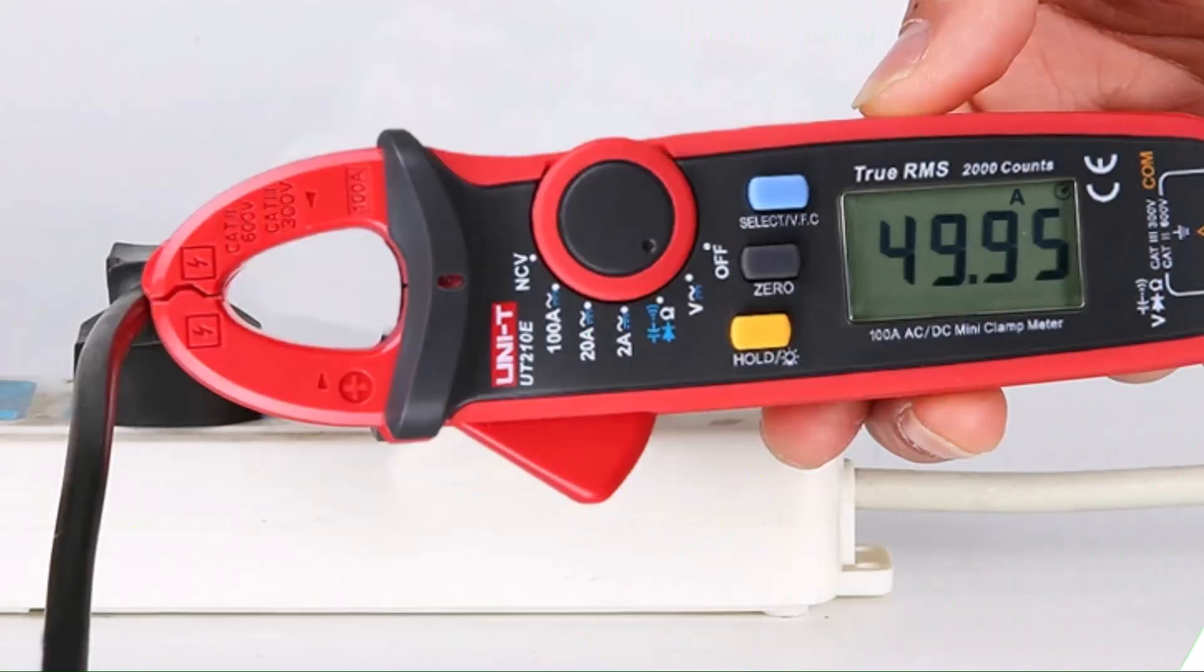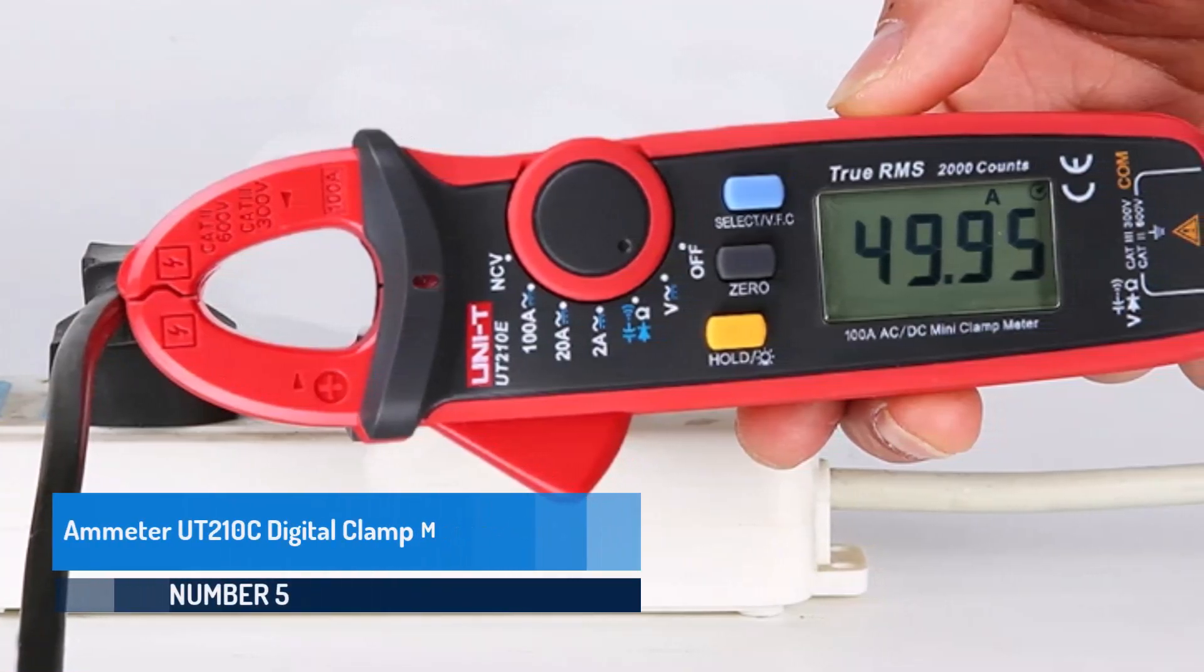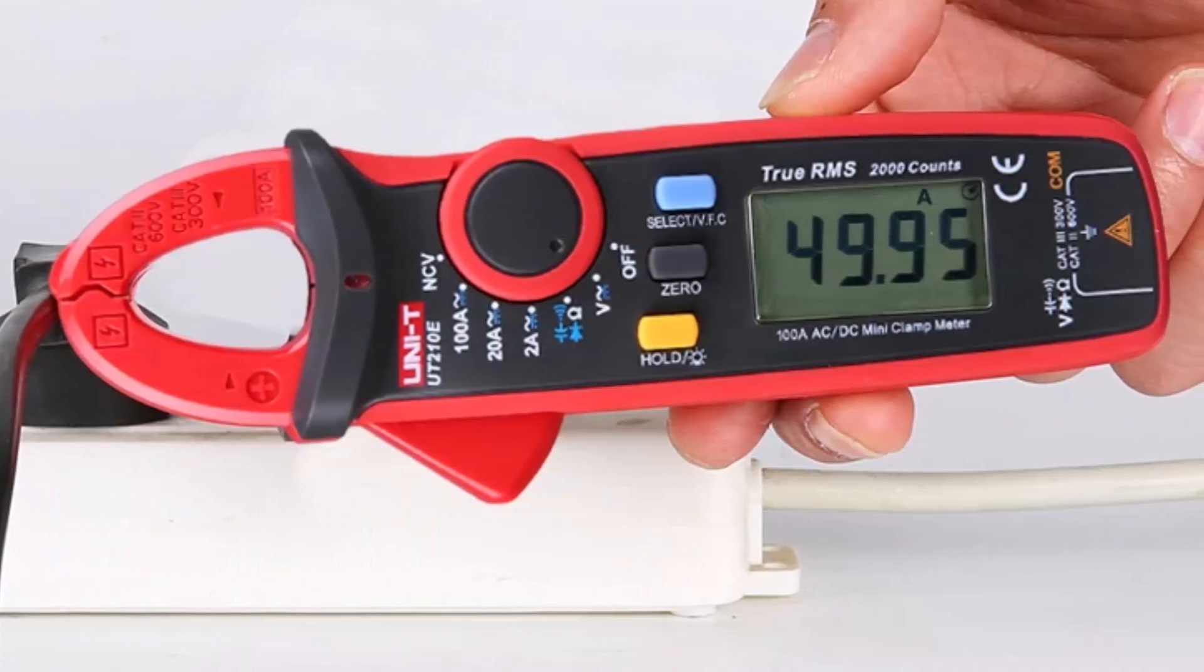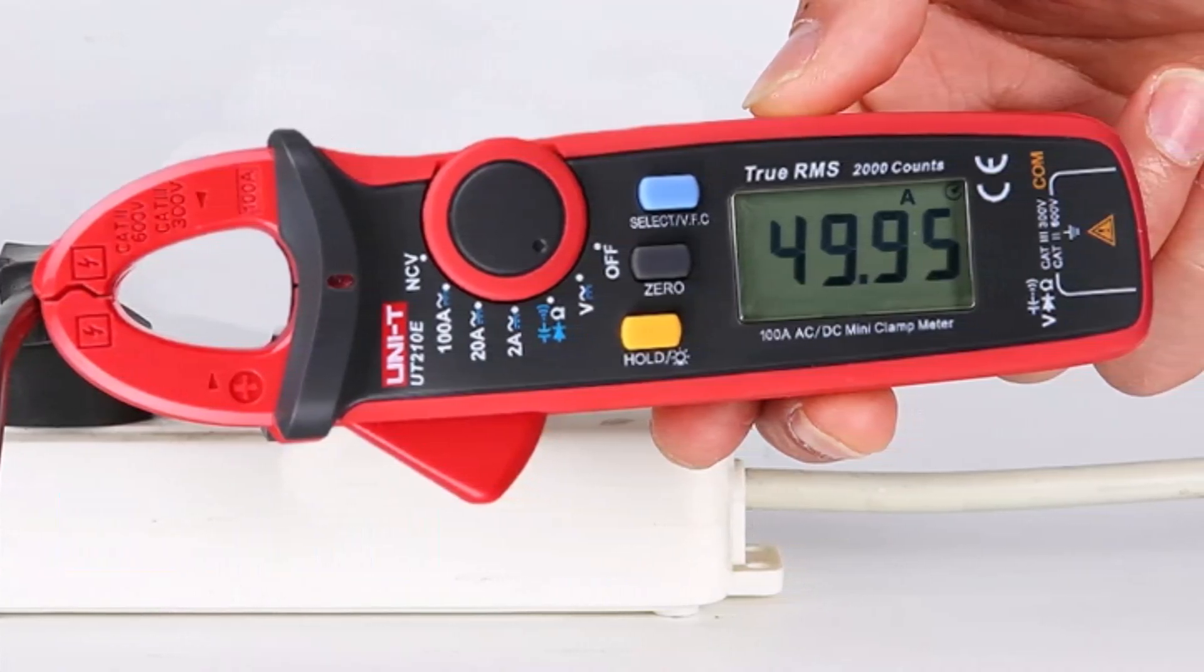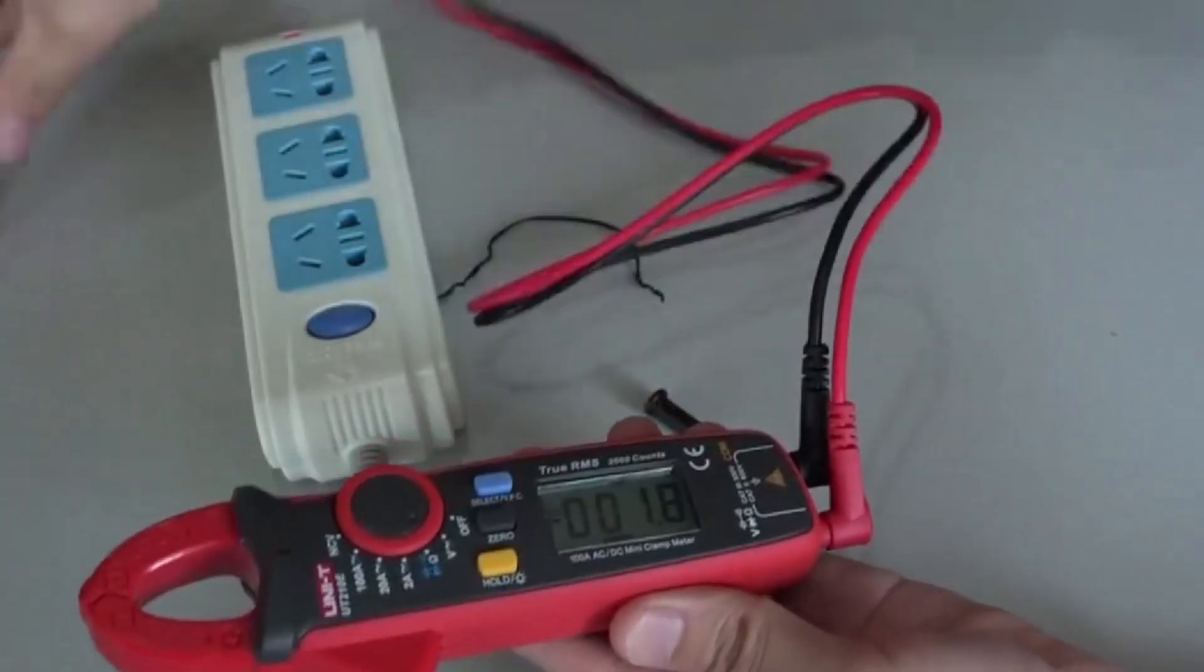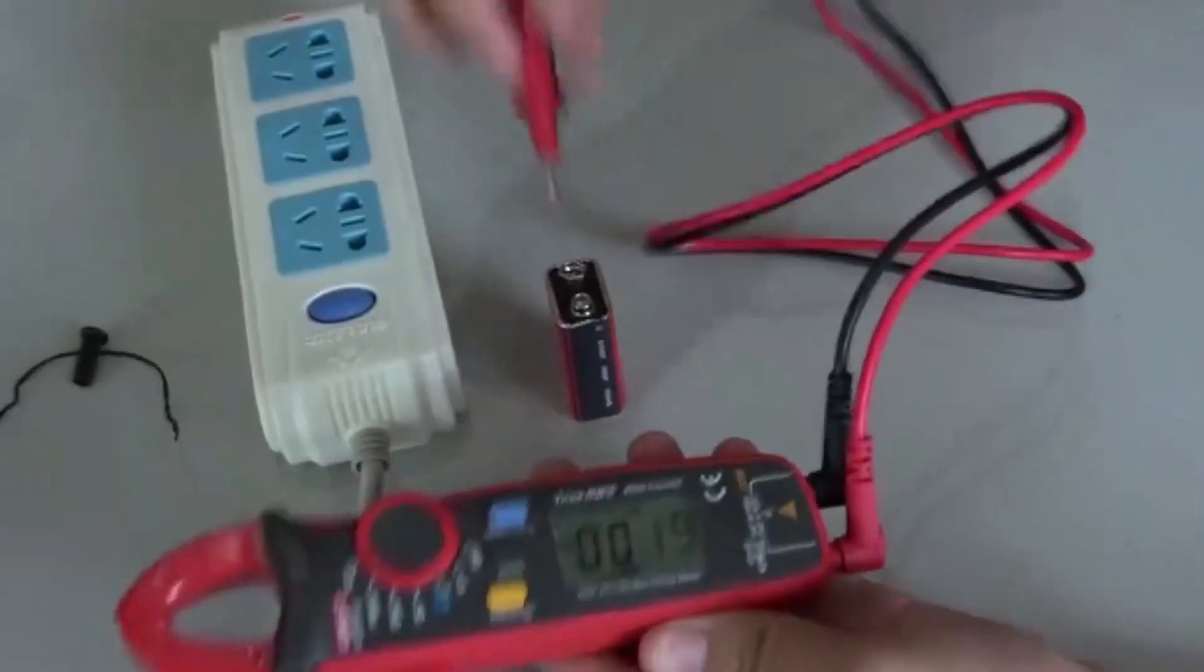Number 5. Ammeter UT-210C Digital Clamp Meter. The Ammeter UT-210C Digital Clamp Meter offers a lightweight, ergonomic design that makes electrical measurement more comfortable and efficient.